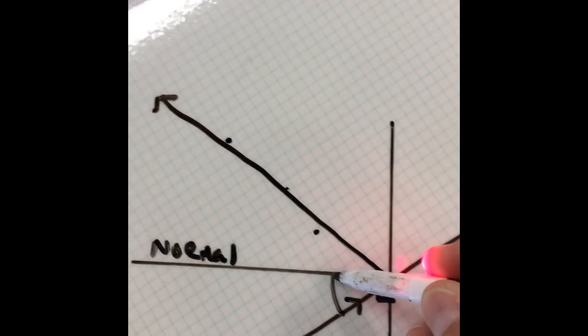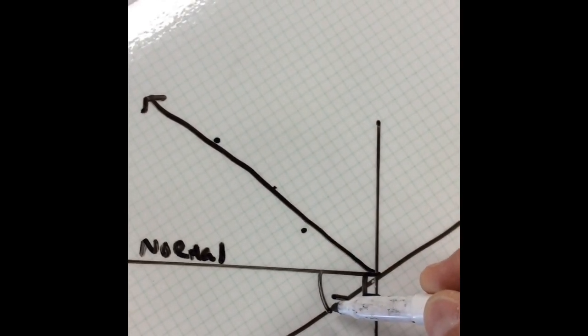And what we're going to do is take a look at the angle here, the incoming incident angle. And we're also going to look at the outgoing or reflected angle.